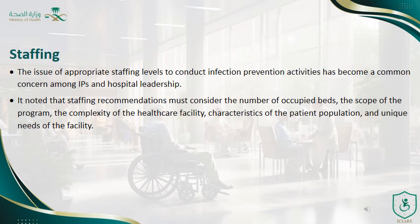Staffing is another main component of infection prevention and control. The issue of appropriate staffing levels has become a common concern among infection preventionists and hospital leadership. Staffing recommendations must consider the number of occupied beds, scope of service, complexity of the healthcare facility, population served, characteristics of the patient population, and the unique needs of the facility. Each healthcare facility has its required staffing number based on scope of service, bed capacity, and the characteristics of the population served.